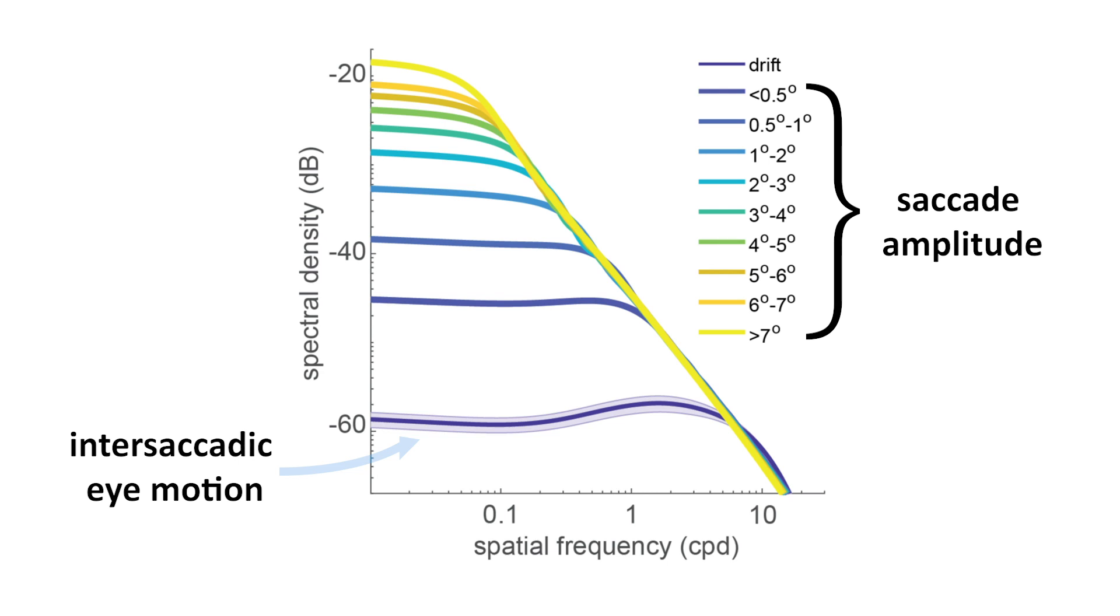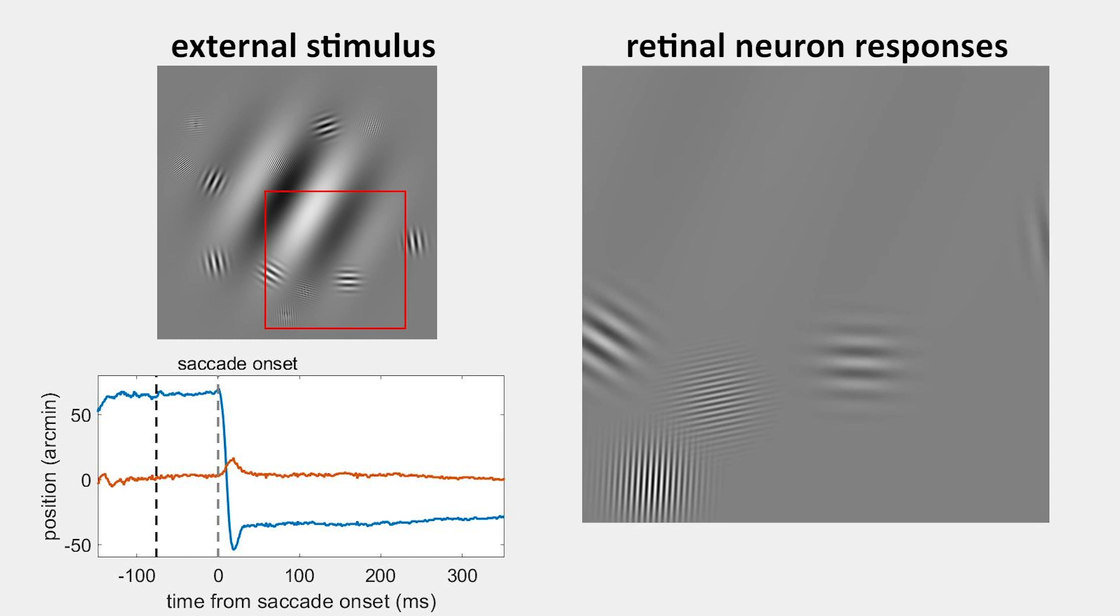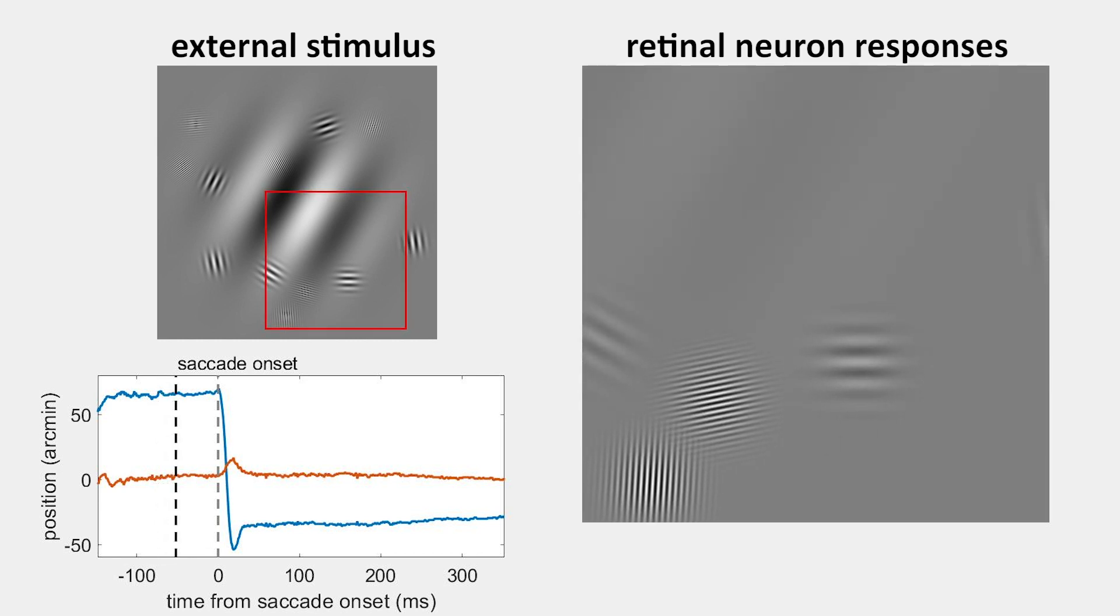This result implies the input to the retina changes in a systematic manner following a saccade. To illustrate these dynamics, here we show a simulation of retinal neuron response following a saccade. The external stimulus is a group of gratings at different spatial frequencies.